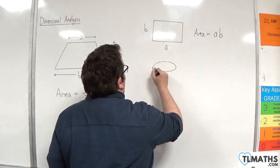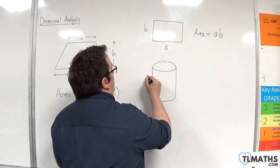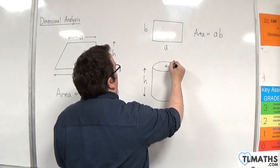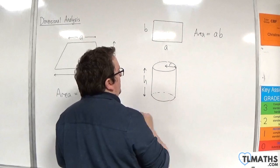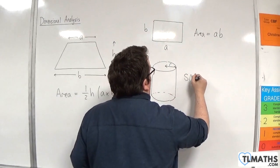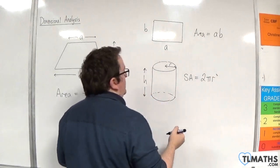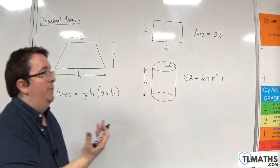If you were looking at the surface area of a cylinder, so h and the radius of r, then we've got two areas of circles—one at the top, one at the bottom. So the surface area would be two lots of πr² plus the area of the wrapper, which is 2πrh.